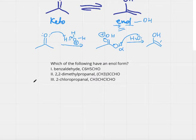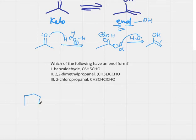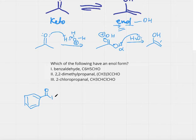Let's see what this question is asking us. It says: which of the following have an enol form, and it gives us different choices. First, let's draw them. The first one is benzaldehyde — that's a benzene molecule with an aldehyde on it, and it looks like this.